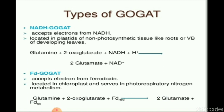The enzyme GOGAT is found in two types. The first is NADH-GOGAT, which accepts electrons from NADH and is located in plastids of non-photosynthetic tissue such as roots or vascular bundles of developing tissue. The second type is FD-GOGAT, which accepts electrons from ferredoxin, is located in the chloroplast, and serves in photorespiration nitrogen metabolism.